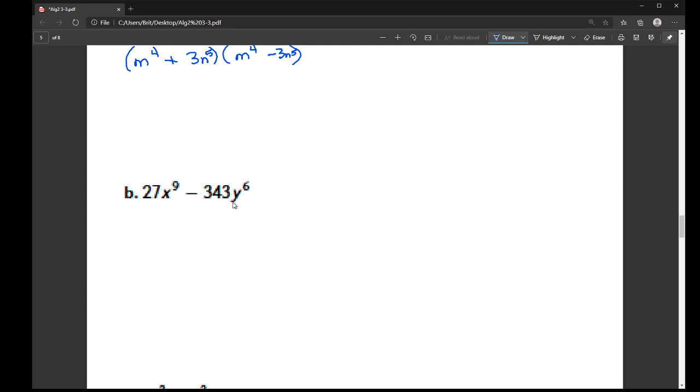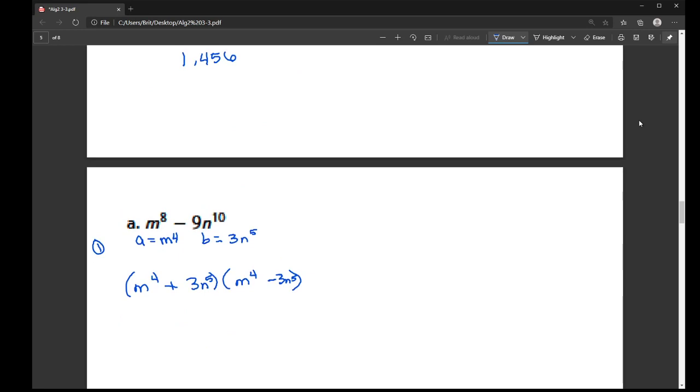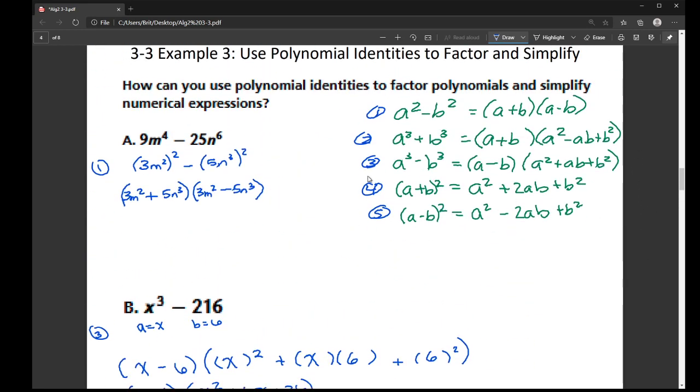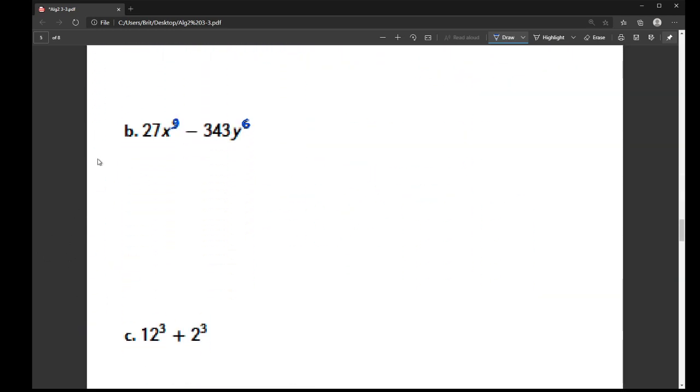All right, now on part B, I'm seeing a lot of 3's going on. 9 and 6, those are both something being cubed, right? Because they're both divisible by 3. 27, I know, is 3 times 3 times 3. So the last thing I want to do is I want to see if 343 has a cube root, which it does. It's 7. So this is a difference of cubes. And so the difference of cubes is right up here. It's option number 3. Okay, so I'm going to be using that difference of cubes formula to help me out.